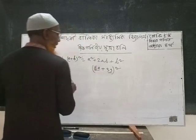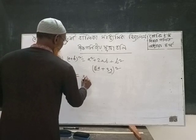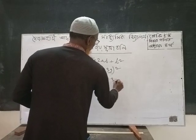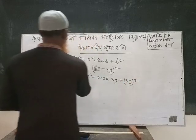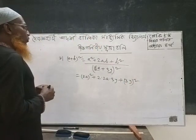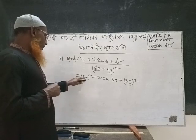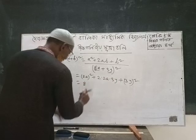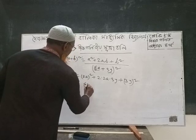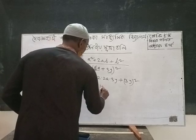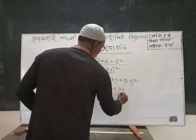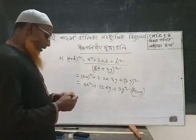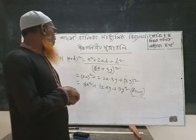A squared plus 2a plus b squared plus 3y, a plus squared. That is the same way to 3y. A squared plus 2ab plus 2a squared plus 2ab plus 2a squared.